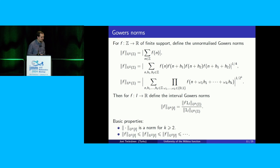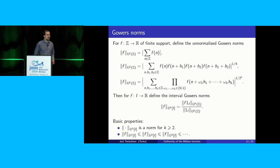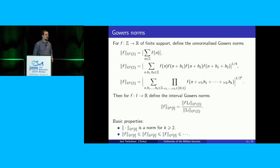A couple of important properties of the Gowers norm: first, it's indeed a norm when k is at least 2. Second, it's increasing in k — the U^k norm is less than the U^{k+1} norm — which means that as k increases, it's harder and harder to bound these norms.